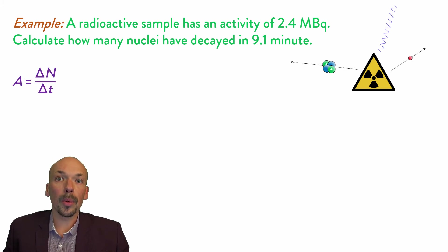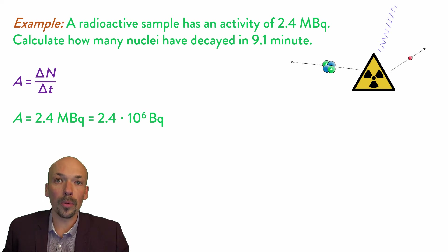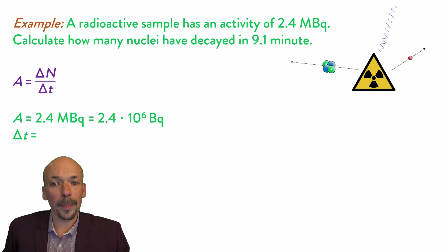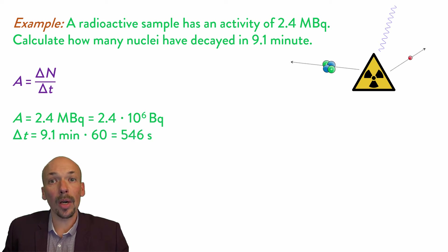To answer this question, we will need this equation. We already got some information. We got the activity: 2.4 MBq, or 2.4 times 10 to the power of 6 Bq. This means that every second, 2.4 million nuclei will decay. We also got the time: 9.1 minutes. But remember, the time needs to be in seconds, so we multiply by 60 and we get 546 seconds.